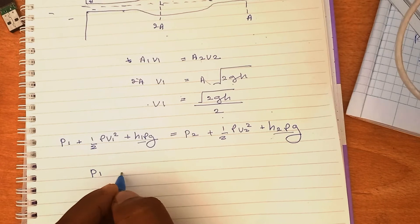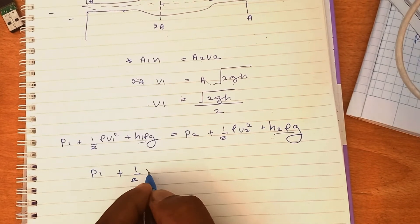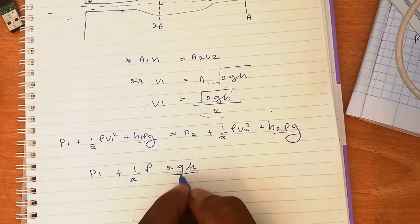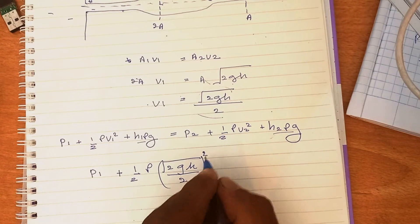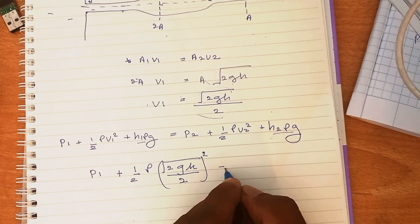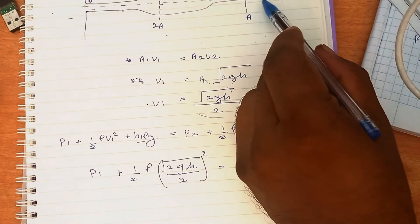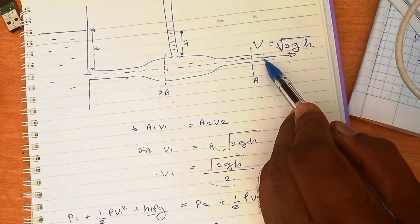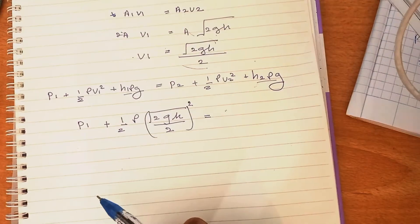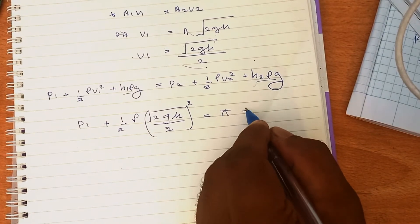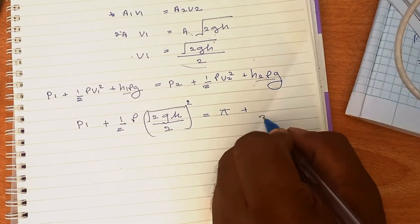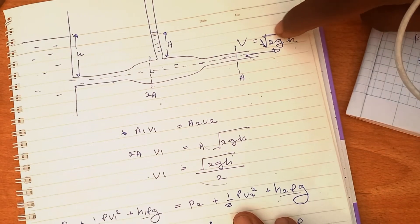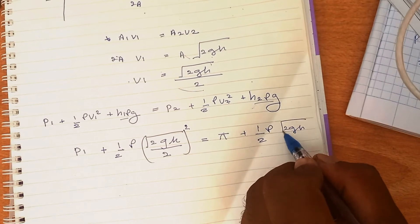Remaining: P₁ + 1/2ρ(V₁)² = P₂ + 1/2ρ(V₂)². What is V₁? V₁ = √(2gh)/2, square it. P₂: this end is exposed to the atmosphere, so the pressure through this cross section equals atmospheric pressure Pᵢ. P₂ = Pᵢ + 1/2ρ(V₂)², where V₂ = √(2gh) squared.